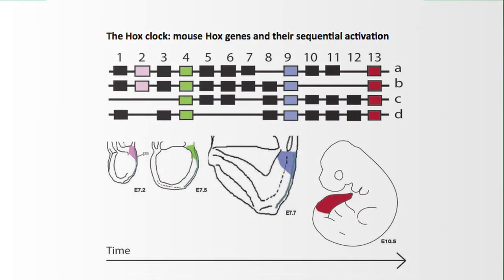The hox genes work in close collaboration with other control genes, among which their cousins are called CDX. So hox and CDX genes are responsible for patterning the body.